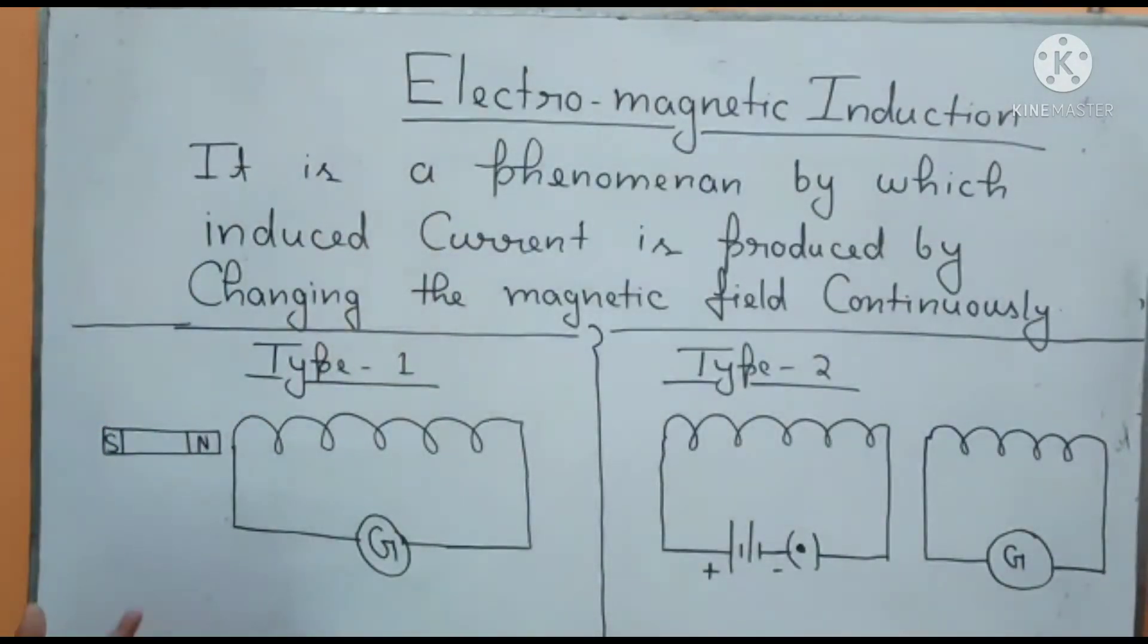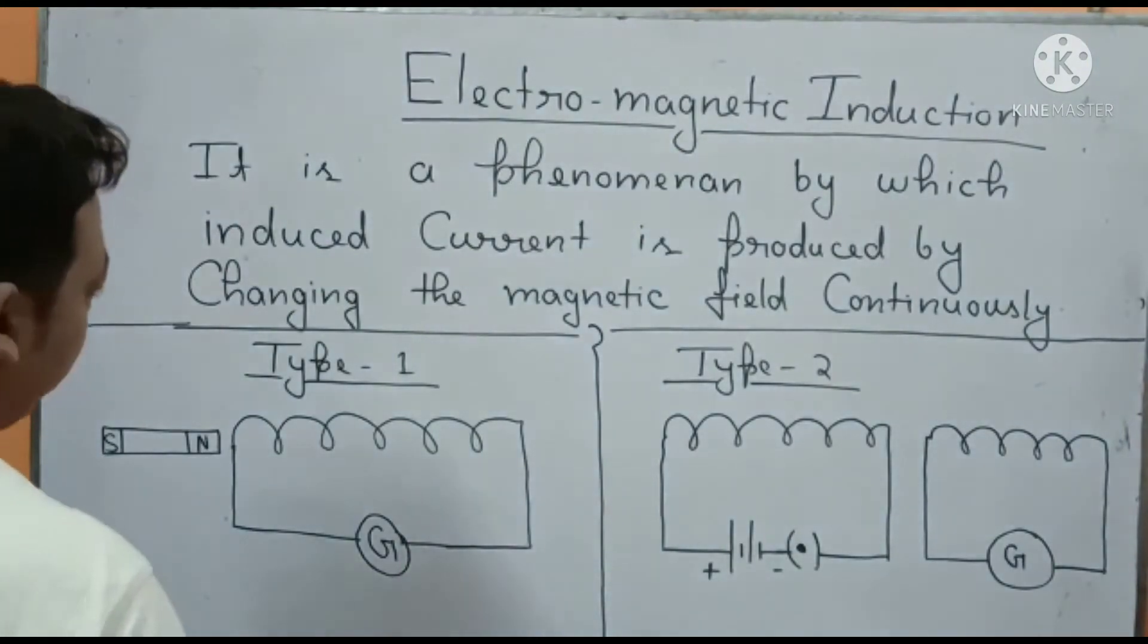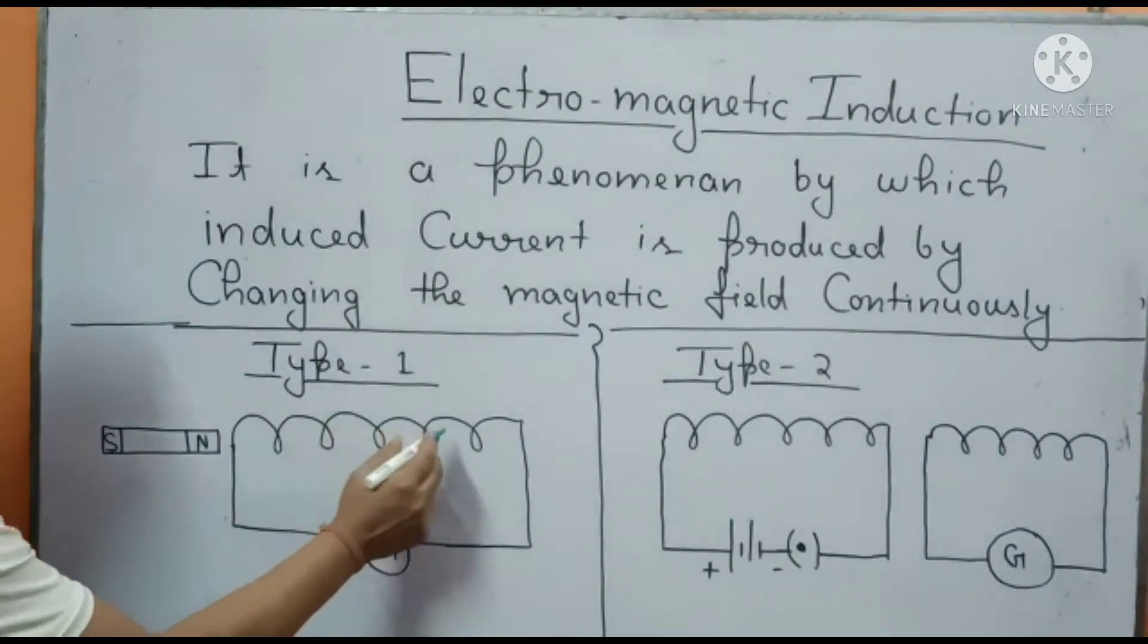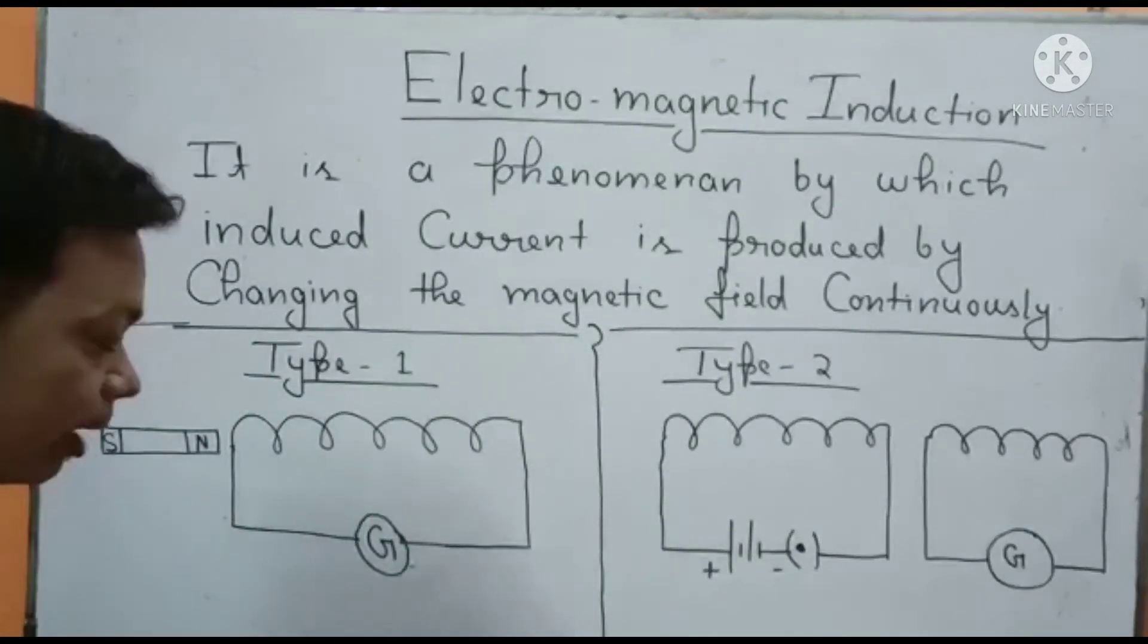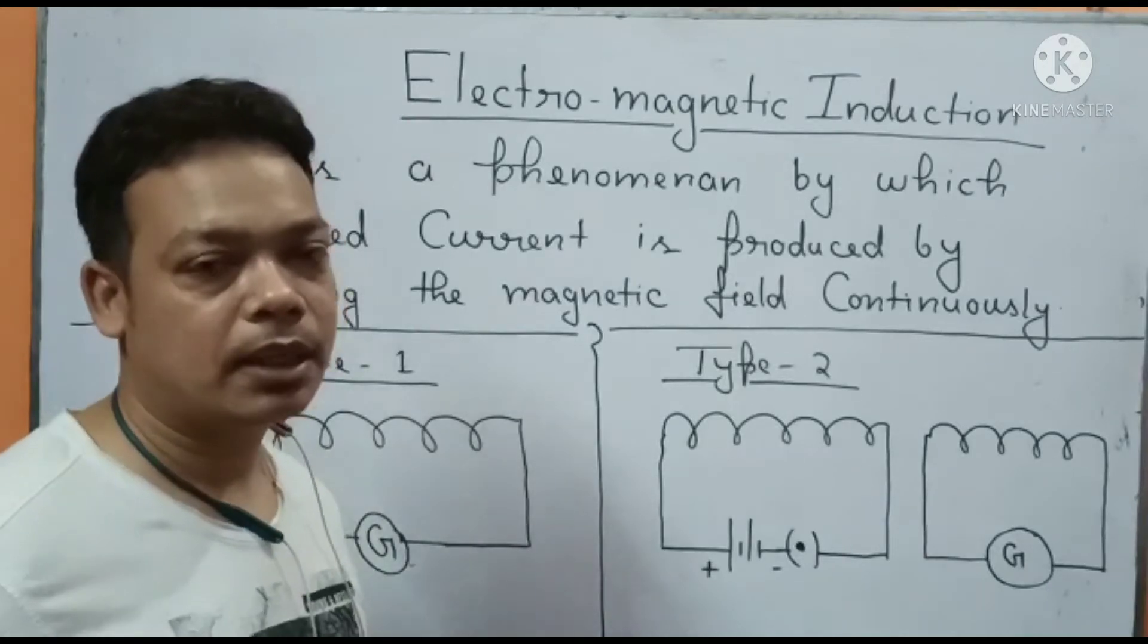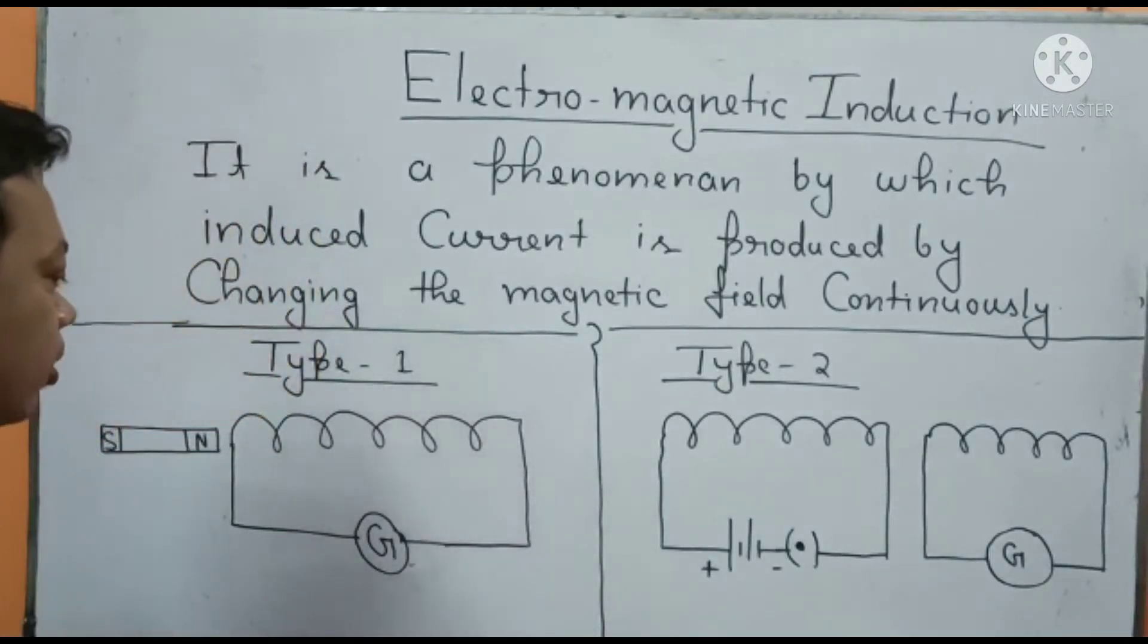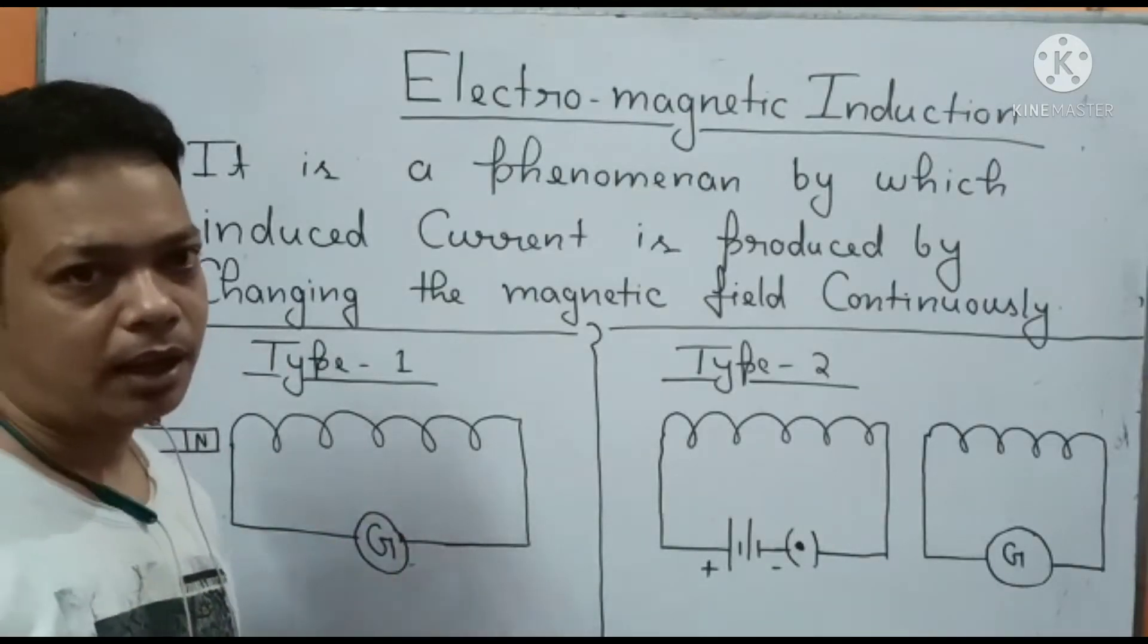So Type 1 and Type 2 have been given there on the board. In Type 1, there is a coil connected to a galvanometer. A galvanometer is a device like an ammeter that measures current and can detect even small quantities of current.